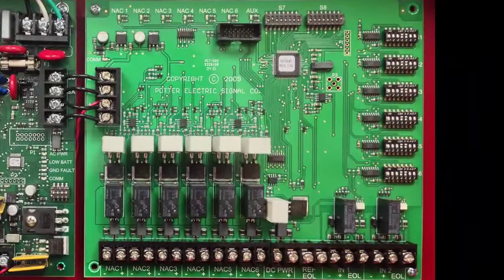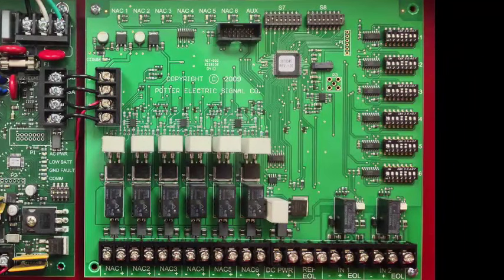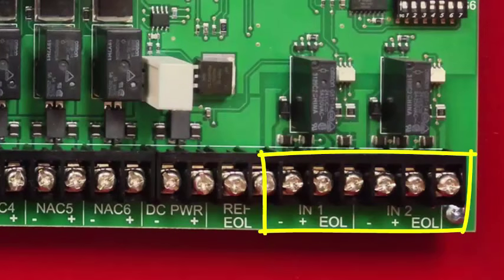Moving to the board on the right, we have several terminals for making your connections, dip switches for programming, and LED indicator lights for troubleshooting. Starting with the terminals on the far right hand side of the board, the two input triggers. Each NAC output can be programmed to follow one or both of the trigger inputs. That programming is done via the dip switches, which we will talk about later in this video.